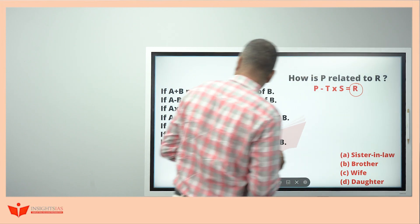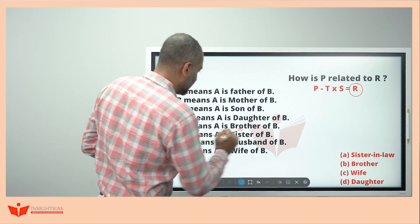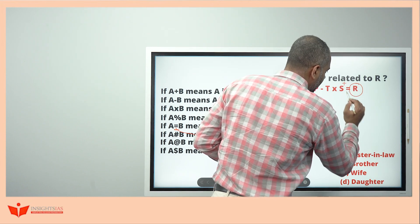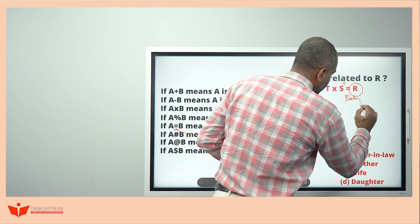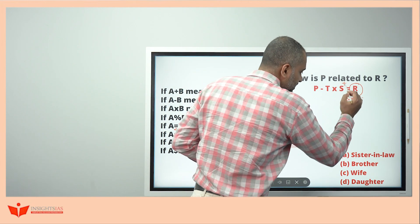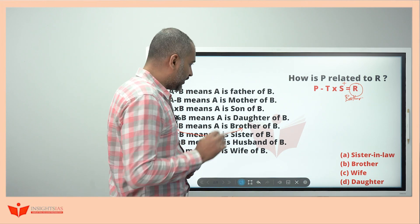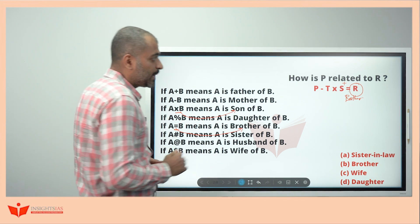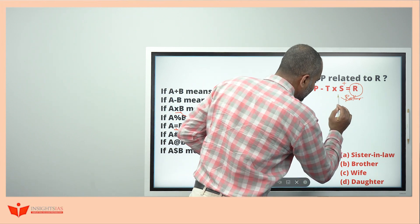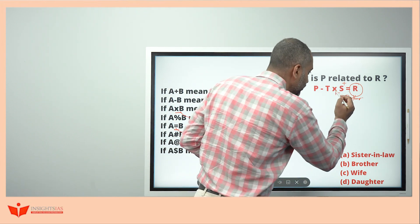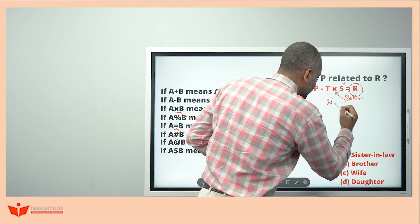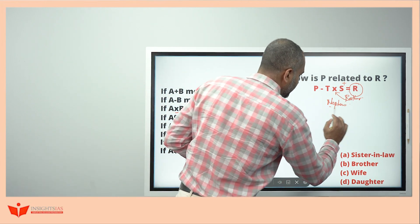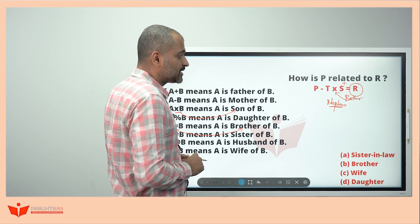R equal to means brother — S is brother of R. The relation is brother. Into means son, so brother's son is nephew. We got nephew here.